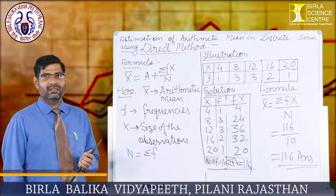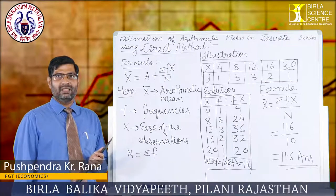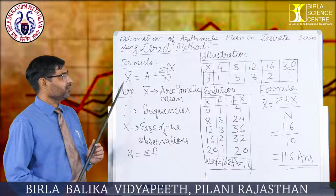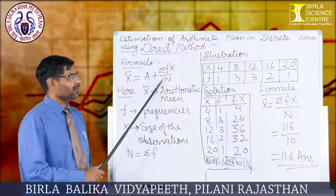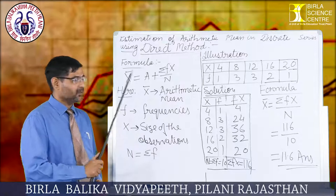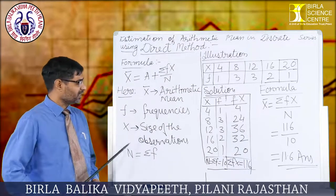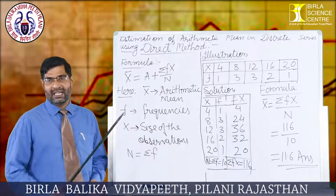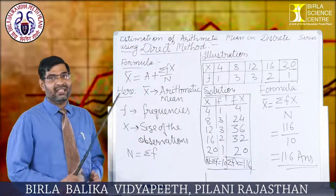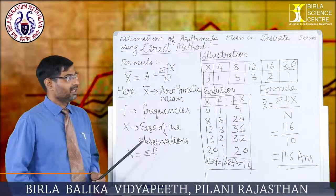Hello students, today we are going to learn how to estimate arithmetic mean in discrete series using direct method. The formula is x̄ = Σfx / n, where x̄ is the arithmetic mean, f is frequencies, x is the size of observations, and n = Σf. In a frequency series, n is always the sum total of the frequencies — always remember that.